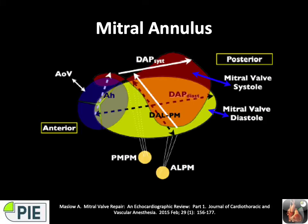The annulus is a dynamic fibromuscular ring. It's oval and saddle-shaped, although it flattens in disease, with anterior and posterior annular segments. The anterior annulus makes up one-third of the annular circumference, forms part of the cardiac trigone skeleton, and is relatively immobile and well-supported — mostly fibrous tissue forming part of the LVOT. The posterior annulus makes up the remaining two-thirds of annular circumference, is mostly membranous and muscular, blends into the muscular LA and LV, and is weaker and thinner — especially the posterior central annulus, which is almost devoid of collagen and mostly loose connective tissue, making it prone to dilatation.